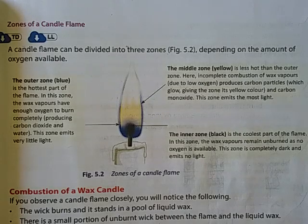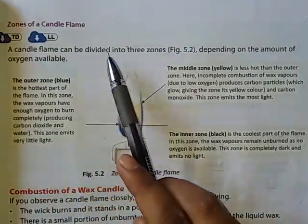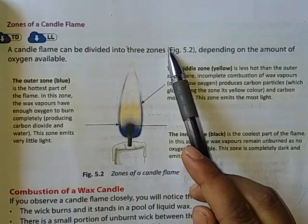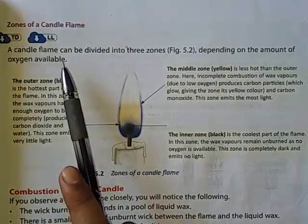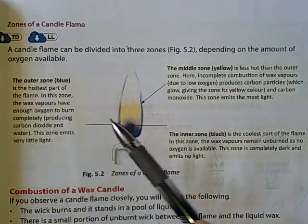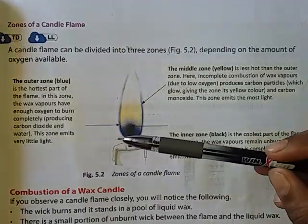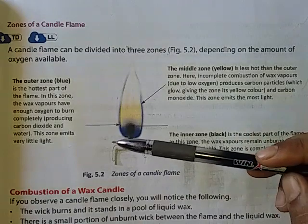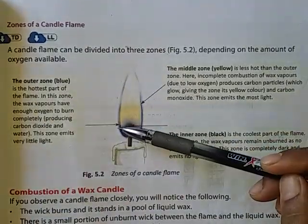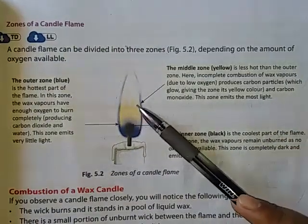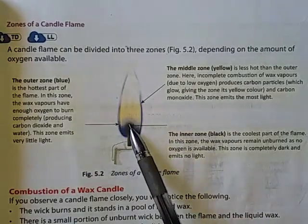Now we will discuss the zones of a candle flame with the help of a figure. A candle flame can be divided into three zones depending on the amount of oxygen available. The three zones are: first, the outermost zone; second, the middle zone; and third, the innermost zone.